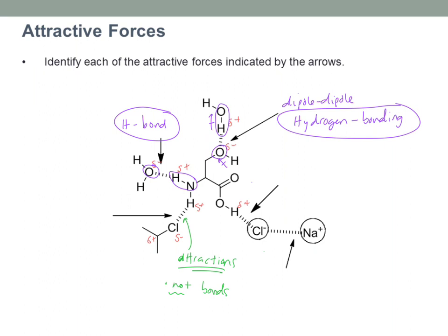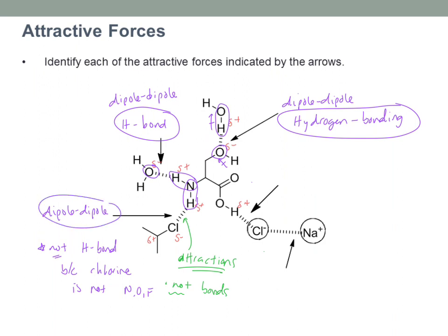Looking at the one right below, I've got a partially positive hydrogen and a partially negative chlorine — definitely dipole-dipole. I check for hydrogen bonding: I have an H on an N, which would work for hydrogen bonding, but the hydrogen bond acceptor is a chlorine, which is not an N, O, or F. So this is not hydrogen bonding — it would just be a regular dipole-dipole.